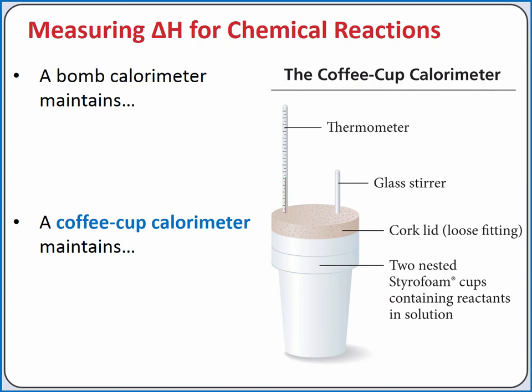We previously learned about a bomb calorimeter, which maintains a constant volume. When a combustion reaction is performed at constant volume in a bomb calorimeter, the change in internal energy for the reaction is equal to the heat. A coffee cup calorimeter, on the other hand, maintains a constant pressure since it is open to the atmosphere. This allows us to calculate the change in enthalpy for a reaction, which equals heat when the reaction is carried out at a constant pressure. Coffee cup calorimeters can be particularly useful for reactions that occur in solution.